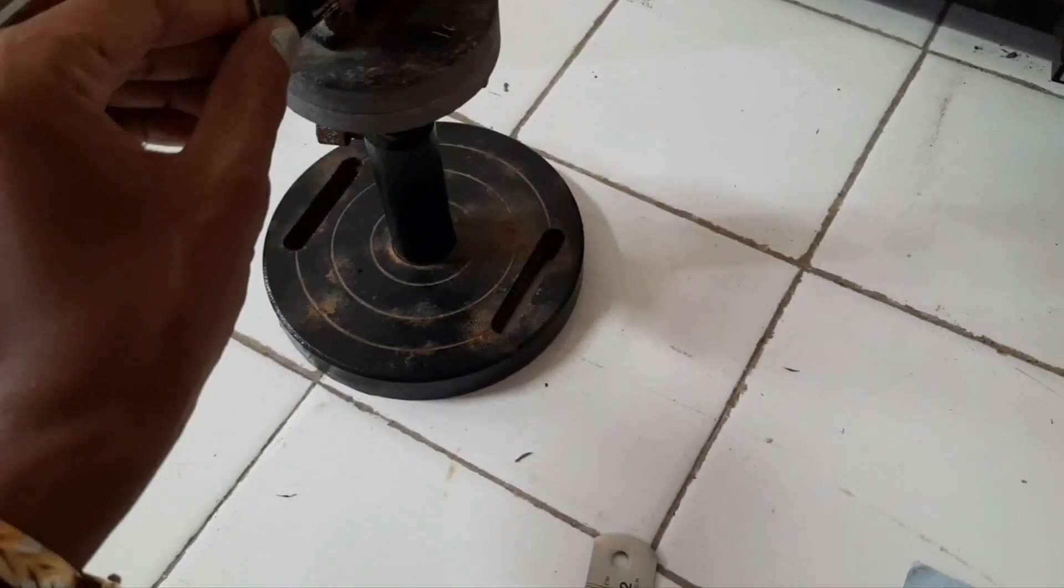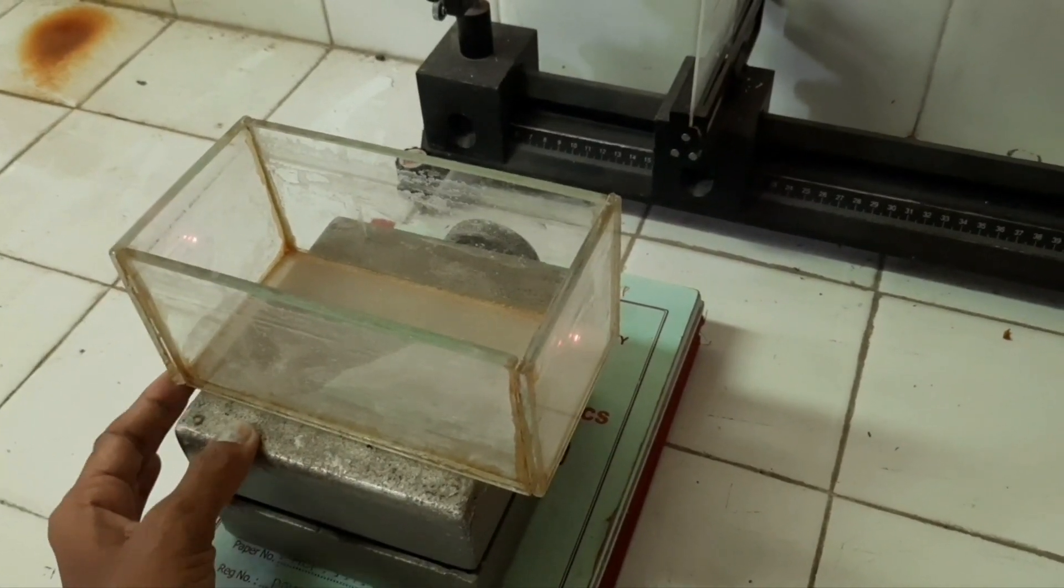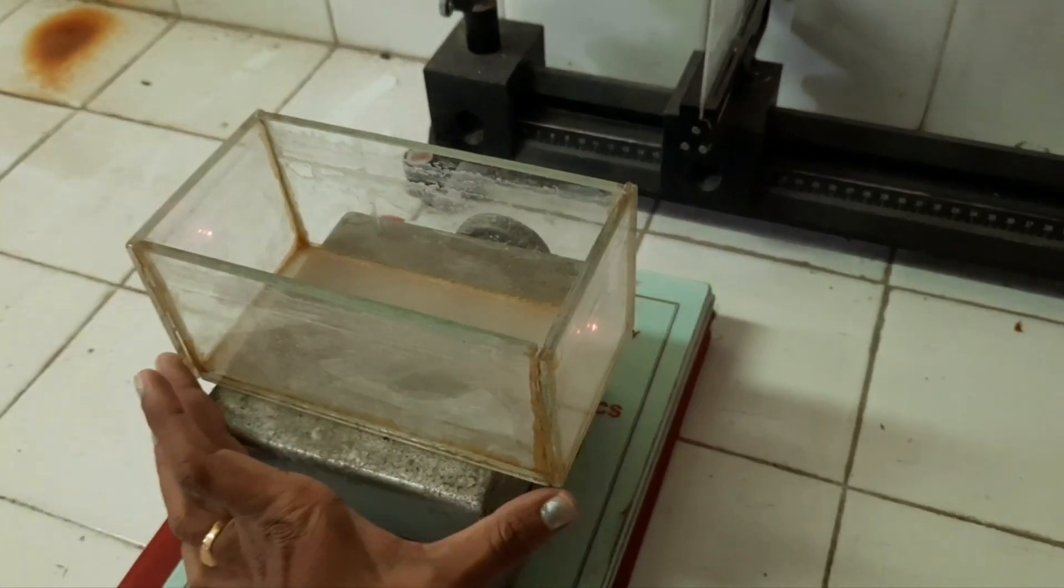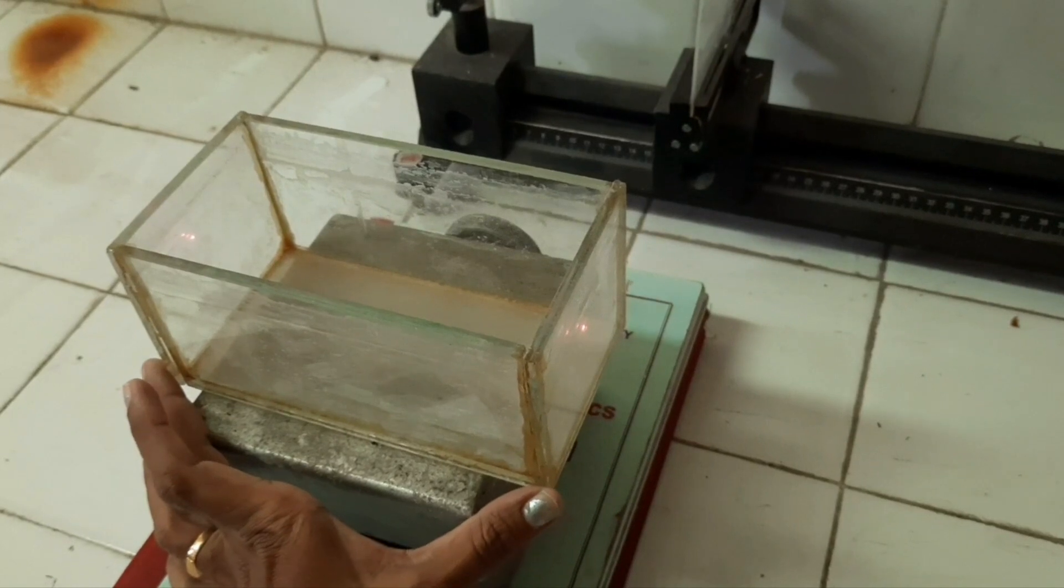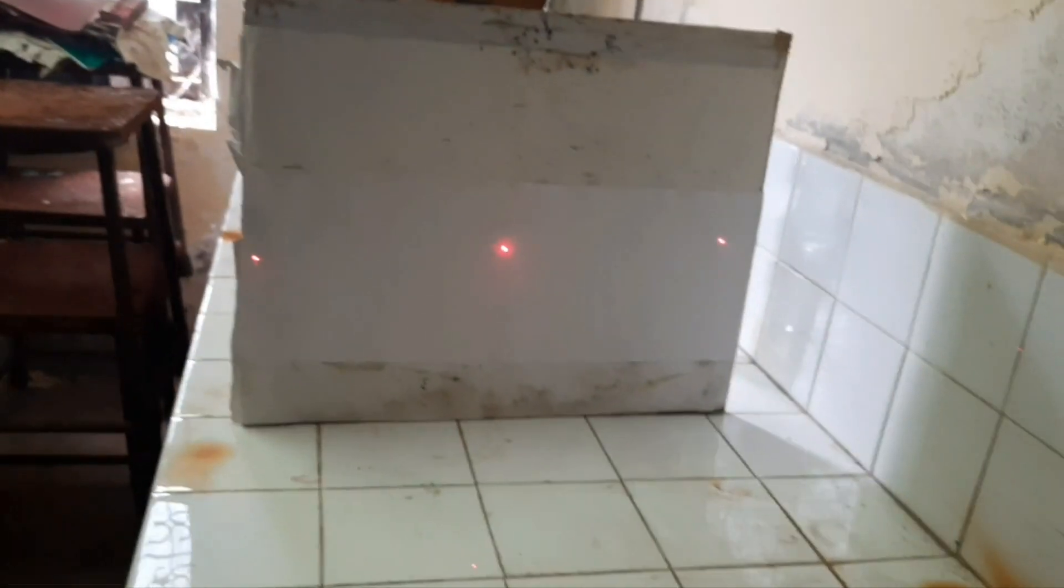600 mm and this is the glass beaker. We have to take reading with and without water. The medium that we are taking here is water and this is the screen.